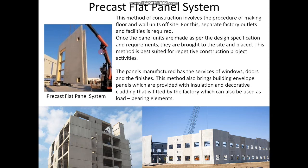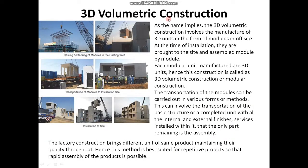The next important type is the 3D volumetric construction method. As the name implies, this method involves the manufacture of 3D units in the form of modules off-site. At the time of installation, they are brought to the site and assembled module by module. From this picture, you can see that building units are manufactured off-site as 3D modules, brought to the site, and upon installation they form the required structure. Each modular unit manufactured is a 3D unit; hence, this construction method is called 3D volumetric or modular construction.